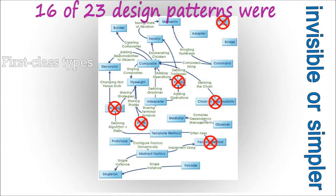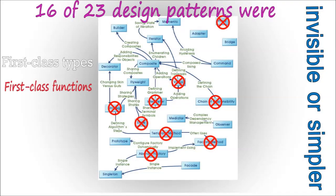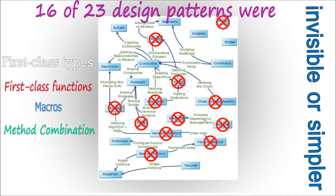First class types: abstract factory, flyweight, factory method, state, proxy, chain of responsibility. First class functions: command, strategy, template method and visitor. Macros: interpreter and iterator. Method combination: mediator and observer.